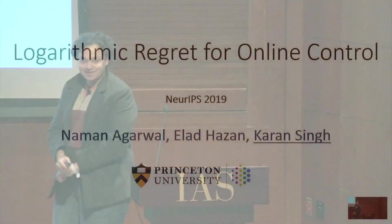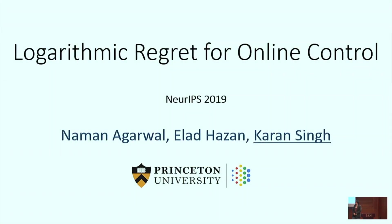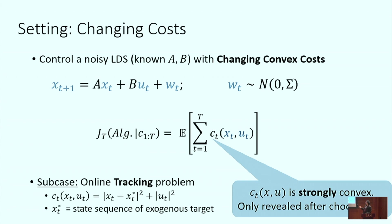I'm Karan, and I'm going to talk about some work on getting fast rates on online control problems. This is joint work with Naman and Alad. The setting we consider is a noisy, known linear dynamical system — we have the system matrices A and B — and the system is equipped with changing convex costs. The online nature of the problem is that we don't know the convex costs in advance. The cost at the t-th time step is revealed only once you commit to the action U_t at that time step.